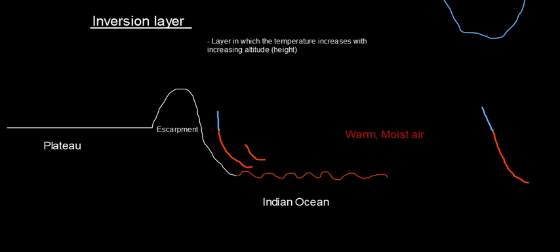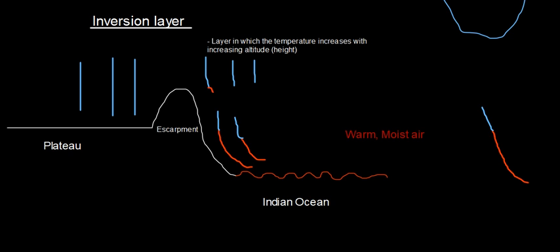That is what usually happens when you have warm moist air rising up — it gets cooler and cooler. Cold air, on the other hand, tends to sink down, putting a lot of force on the surface. But as cold air sinks down, it warms up in a process called adiabatic warming. So as this cold air sinks, it gets warmer and warmer.